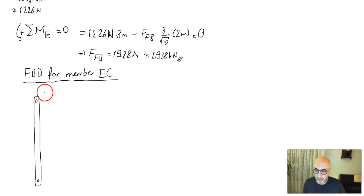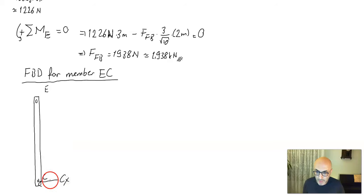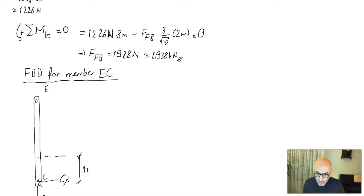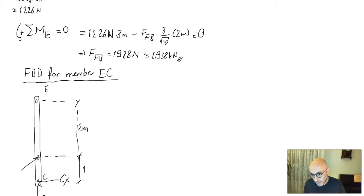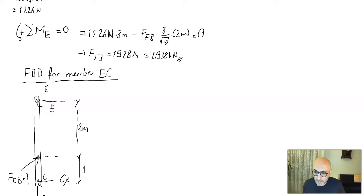Member EC has a pin at C and a pin at E. At pin C there are reaction components CX and CY. At a height of one meter from C there is pin D, and at two meters from C is pin E. At D we have the force FBD that we are trying to find, and at E we have components EX and EY.